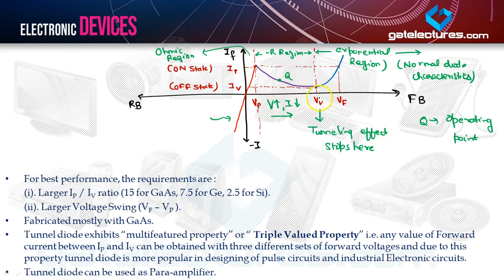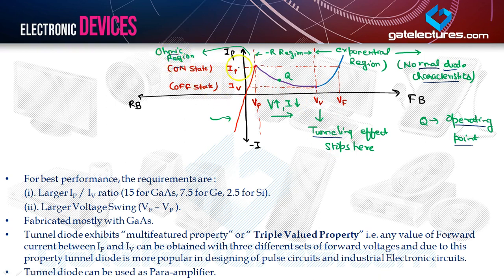In the negative R region, from VP to VV, if we increase the voltage, current decreases. After VV — increasing forward bias beyond the valley voltage — the diode acts as a normal diode. The tunneling effect stops there, and beyond VV it has normal exponential diode characteristics.